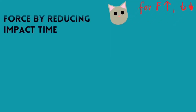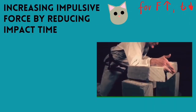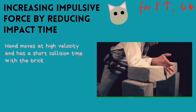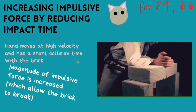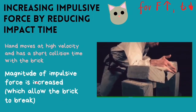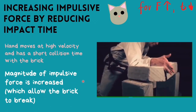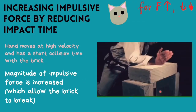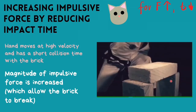Next, let's look at increasing impulsive force by reducing impact time. Have you ever wondered how a martial artist can break a brick with just their hand? The hand moves at a high velocity and has a short collision time with the brick. Therefore, the magnitude of impulsive force is increased, which allows the brick to break. There are also action and reaction forces happening, with the action coming from the hand and the reaction coming upward from the brick, both playing a part in breaking it.